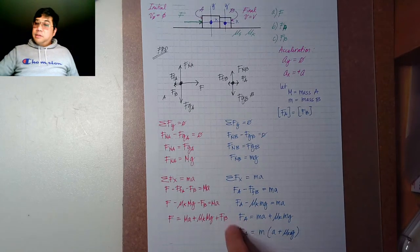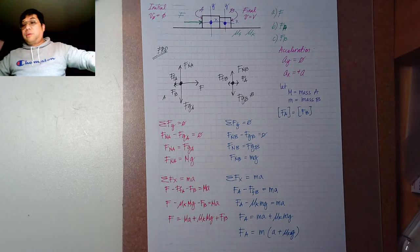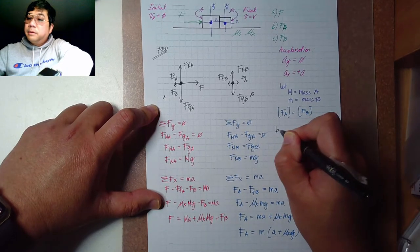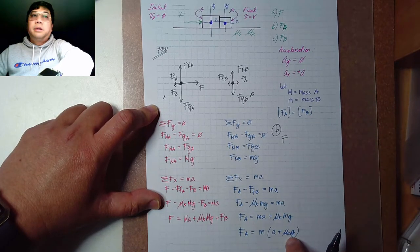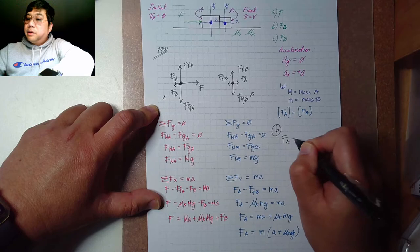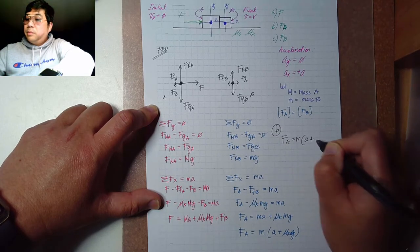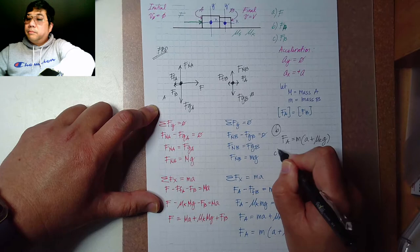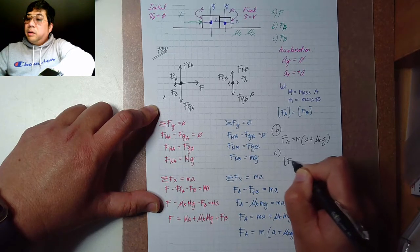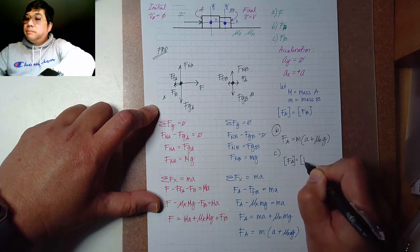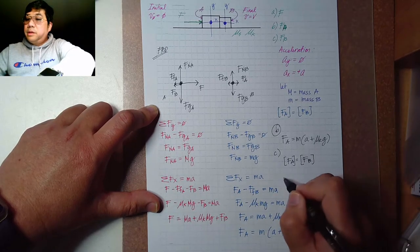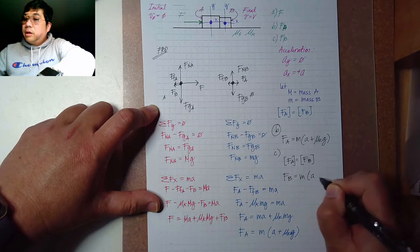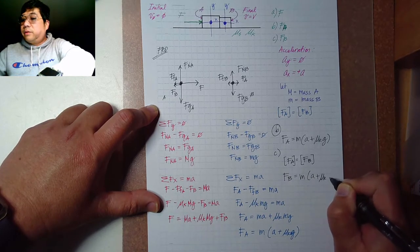For letter B, the force applied by A is m times (A plus μ_k times g). For letter C, since F_A equals F_B in magnitude, the force from block B on block A is also m times (A plus μ_k times g). So we now have answers for both B and C.